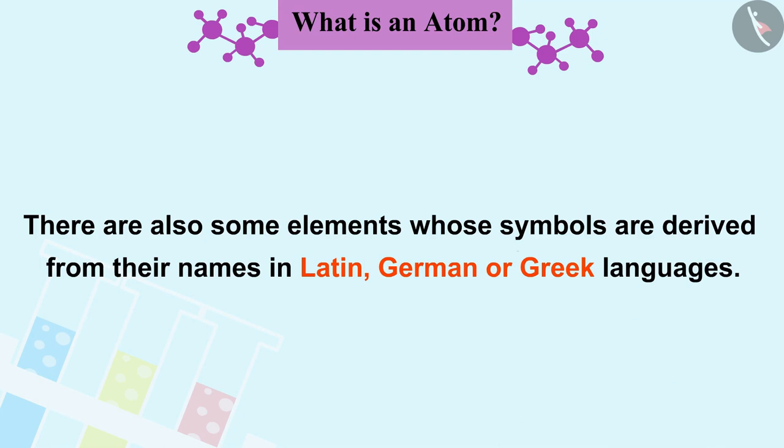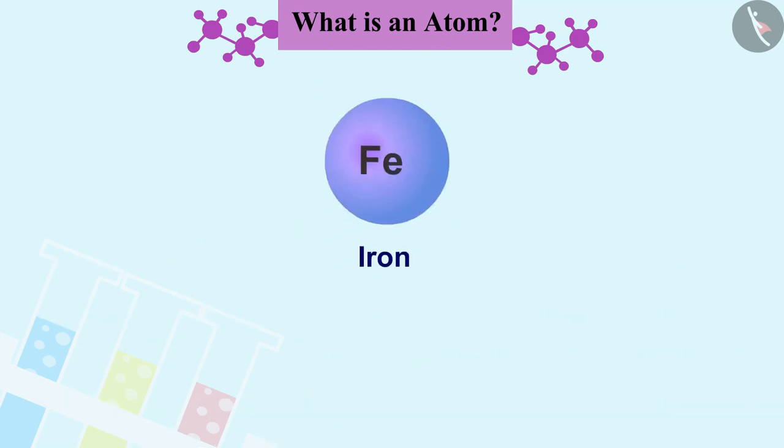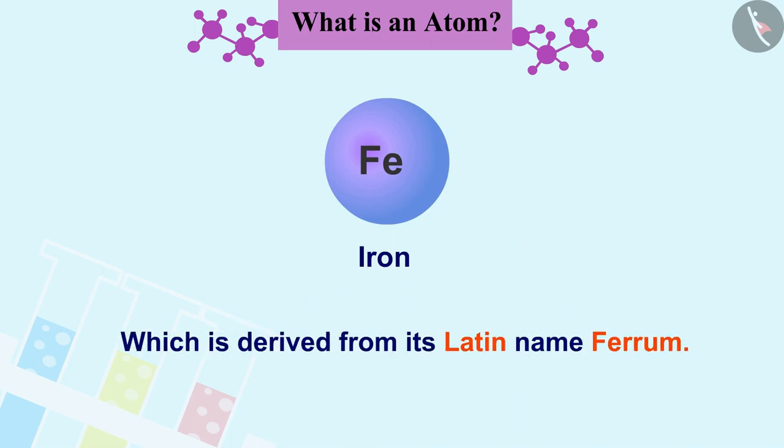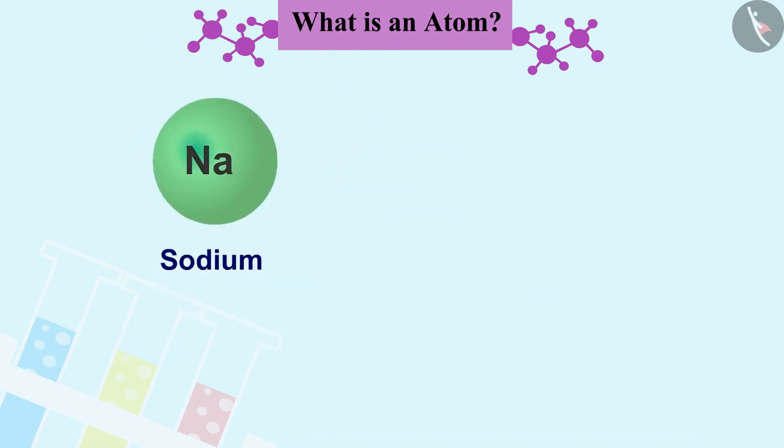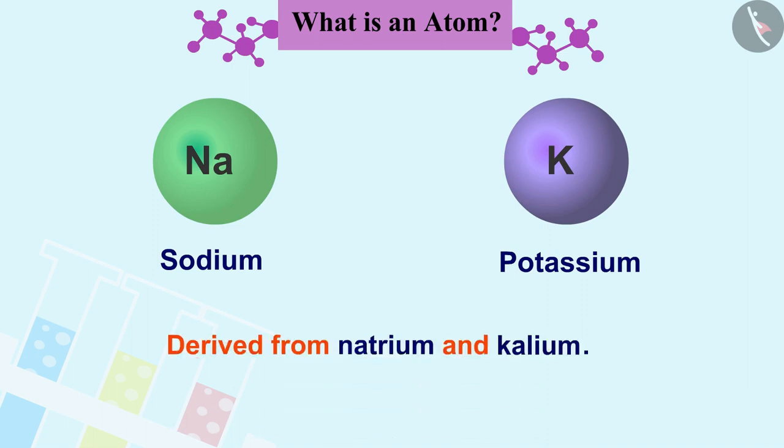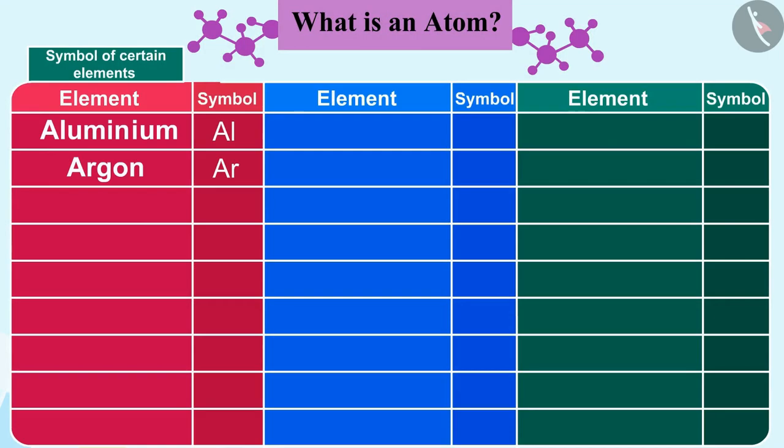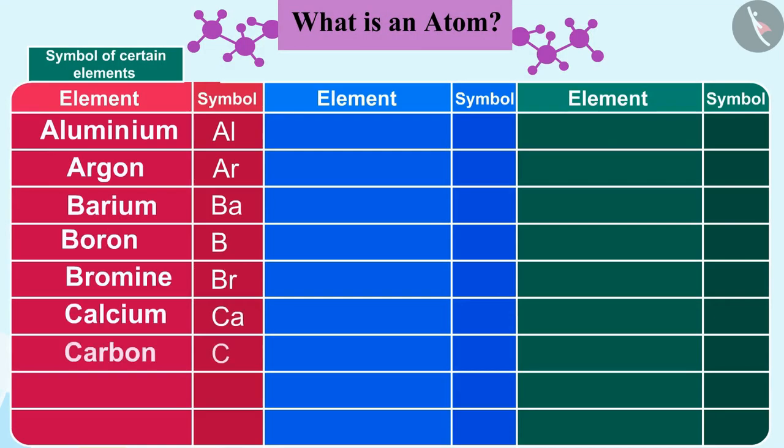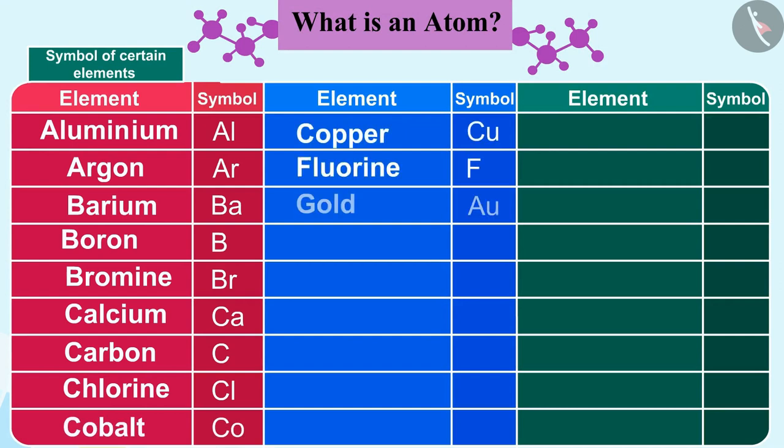There are also some elements whose symbols are derived from their names in Latin, German, or Greek languages. For example, iron symbolizes Fe, which is derived from its Latin name ferrum. Similarly, sodium symbol is Na and potassium symbol is K. They are derived from natrium and kalium. Thus each element has a name and a unique chemical symbol.